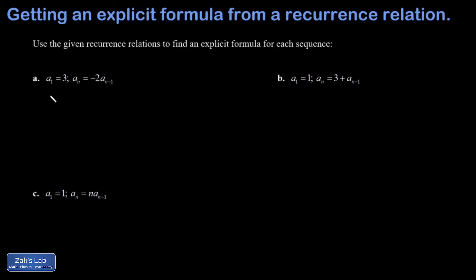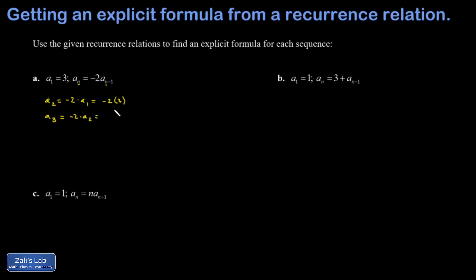For the first one, a₁ = 3. To find a₂ using the recurrence relation, a₂ = -2 · a₁ = -2 · 3. For a₃, plug in n = 3 to the recurrence relation: a₃ = -2 · a₂. So this is a factor of -2 multiplying the previous answer, and I'll move the 3 out in front as a more standard form.